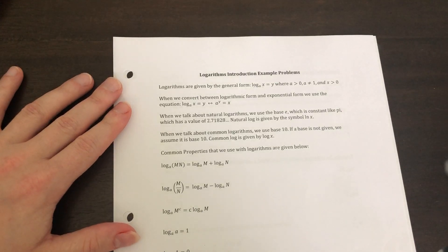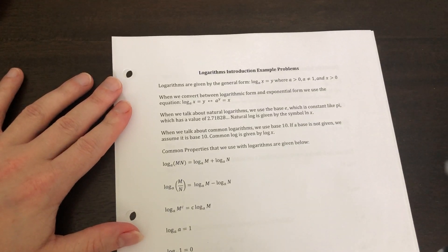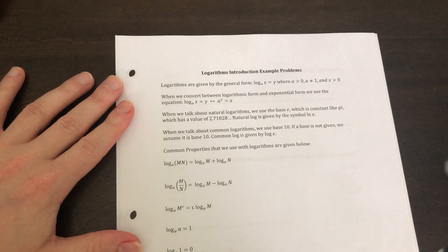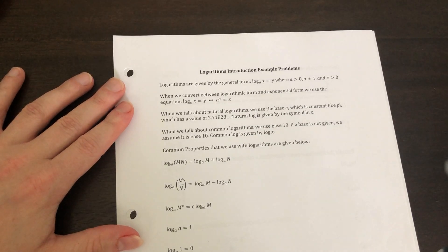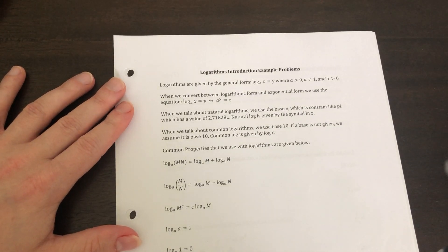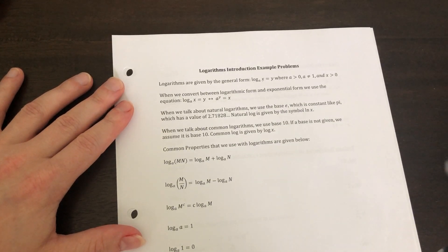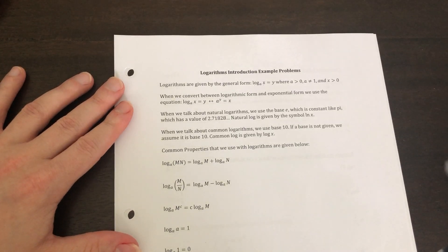There's two different types of logs. We have something called natural log, which is base e. Base e is just like pi. It's a number that is derived that continues on and on forever. Natural log is given by the symbol ln of x, log natural.